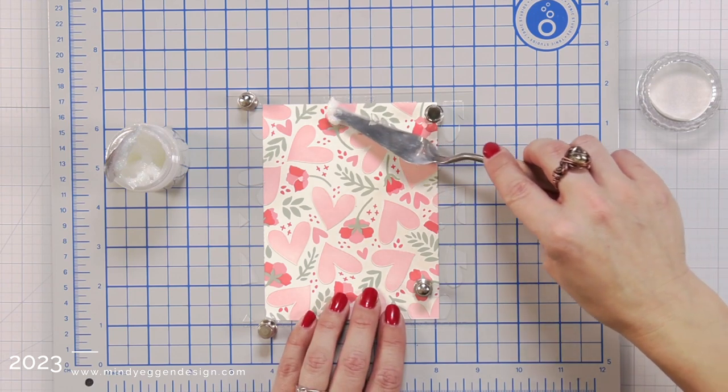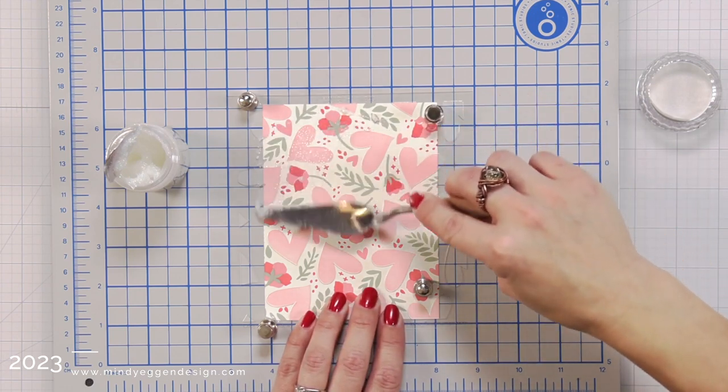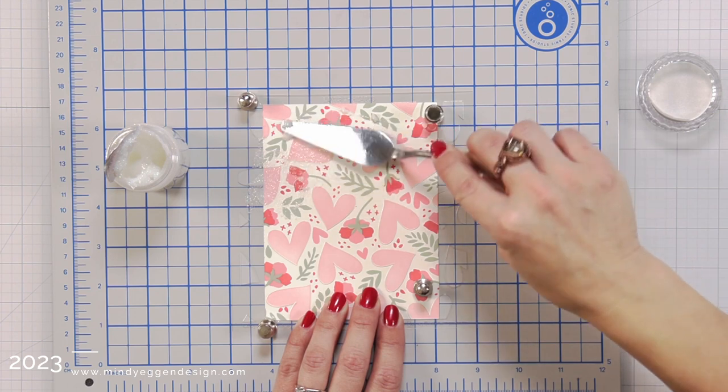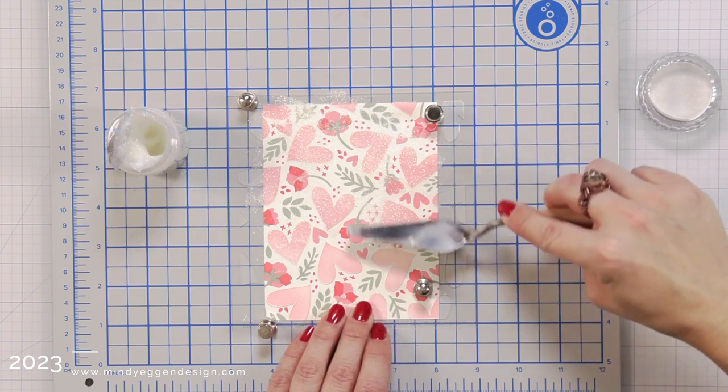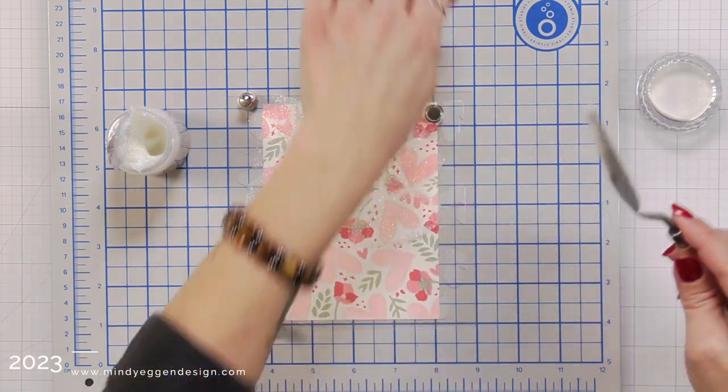This is one of my favorites. It's got a lot of shine and shimmer to it. So I just picked some up with my palette knife. I'm going to spread that over the open areas of the stencils, which a big part of it is going to be those hearts.